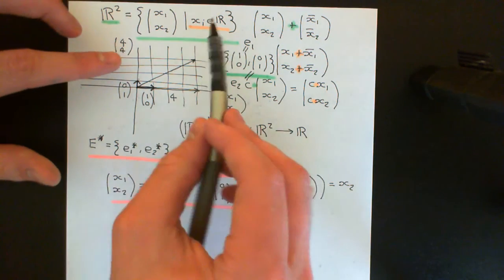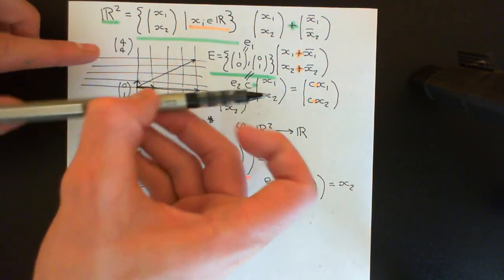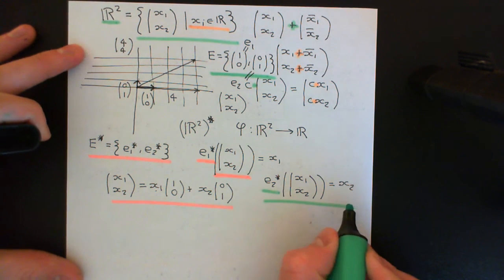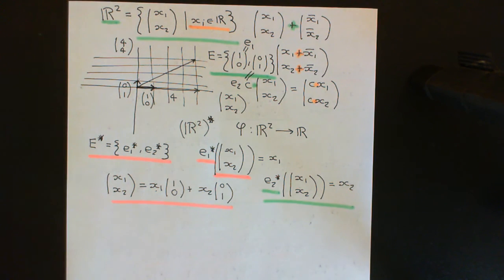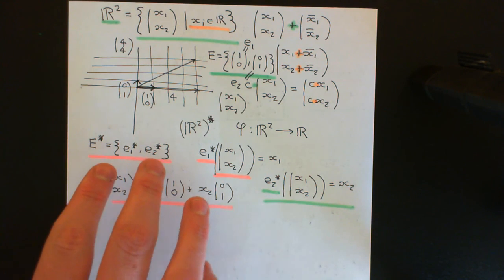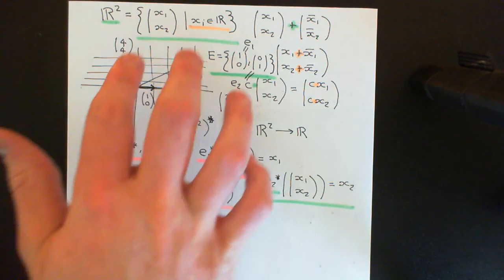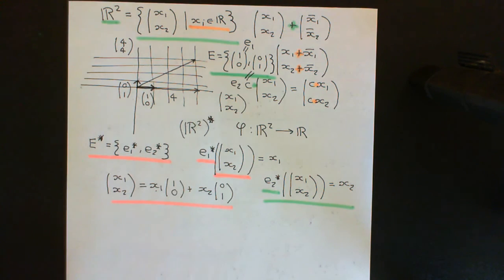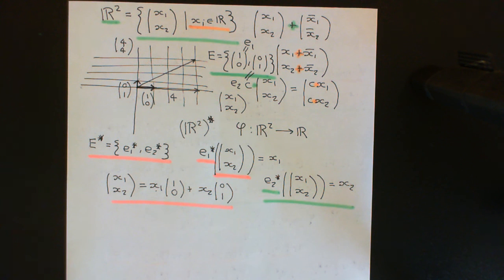Any other element of the dual vector space is just a linear combination of E1 star and E2 star. It won't project as purely onto one axis — it will give a real number combining both coordinates. That is the picture of the dual basis for R² star, and with that we'll end the video.